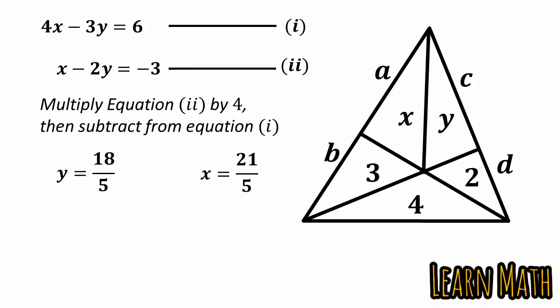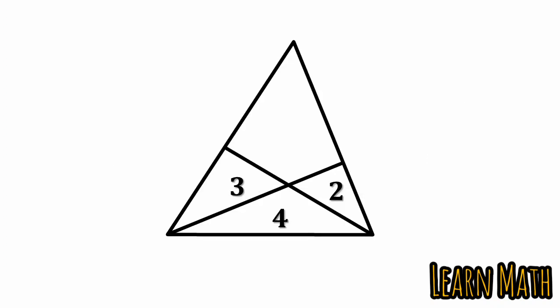By adding these two numbers x plus y, we will get 39 by 5, and 39 by 5 is equal to 7.8. So the unknown area in this figure is 7.8.